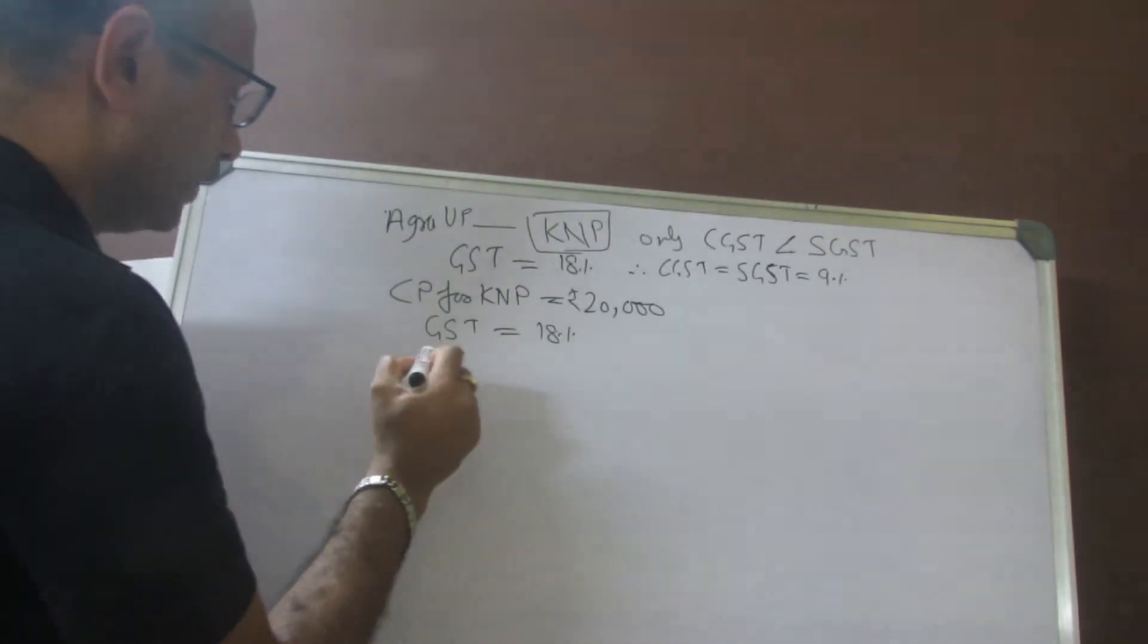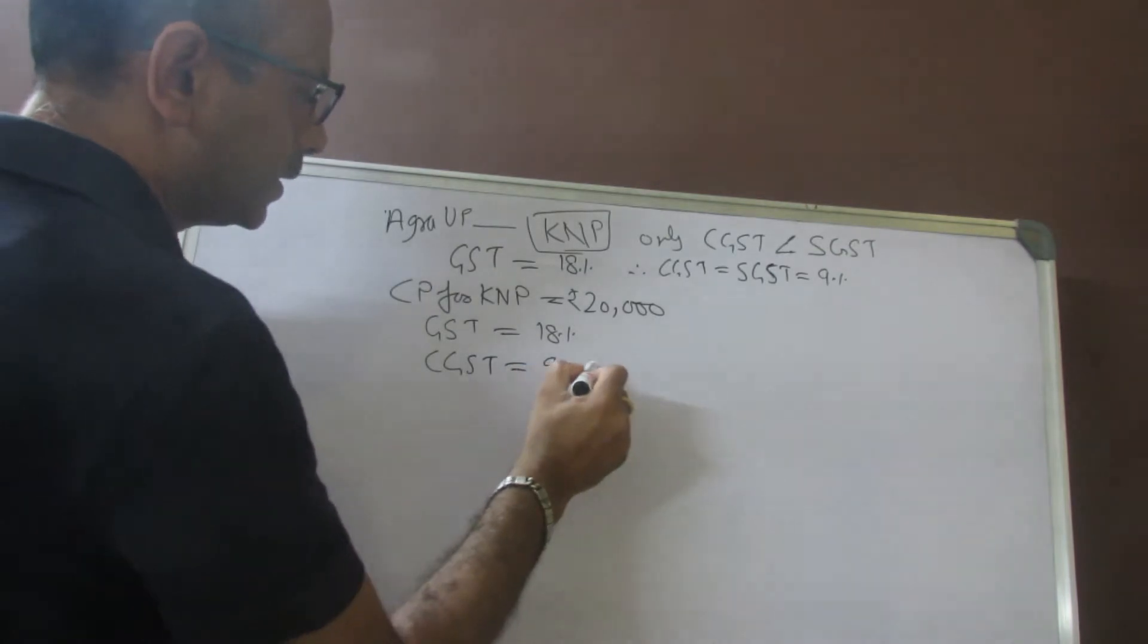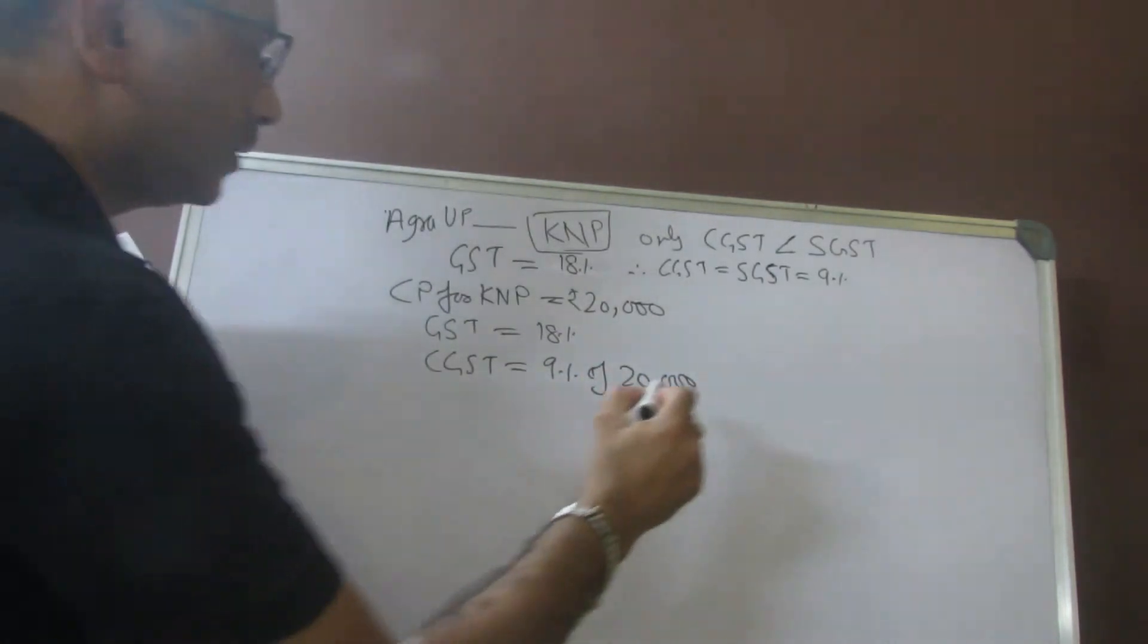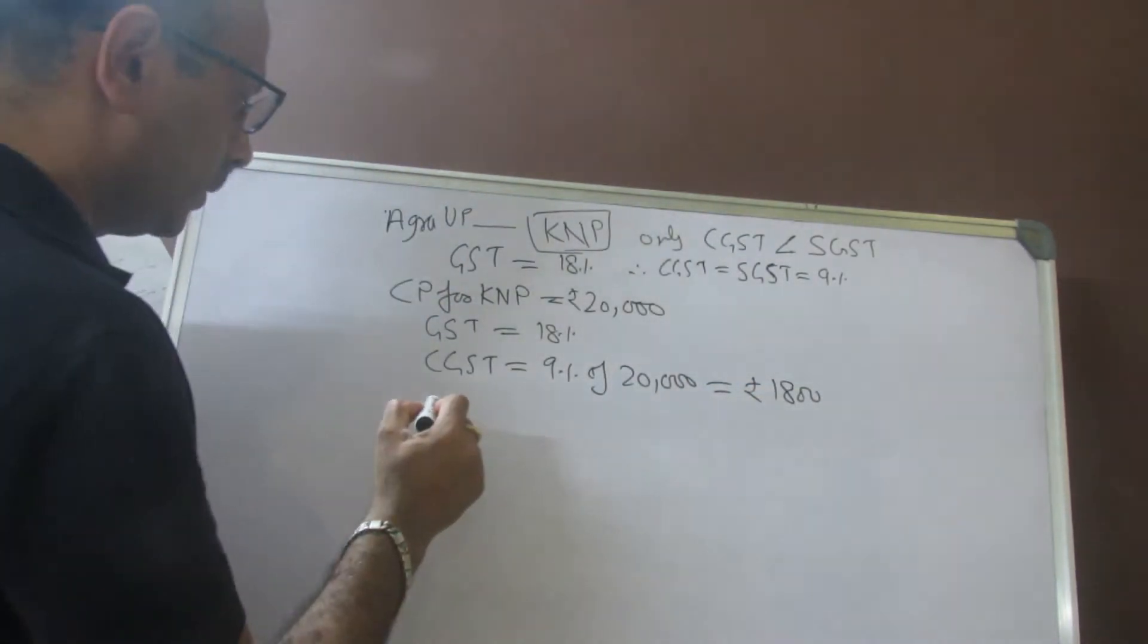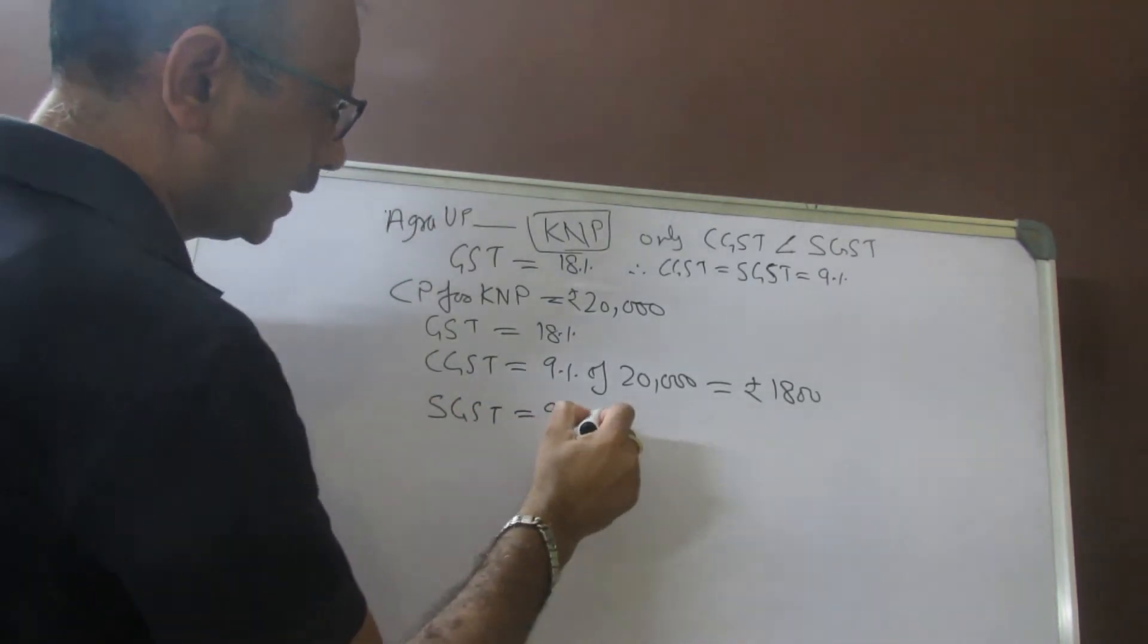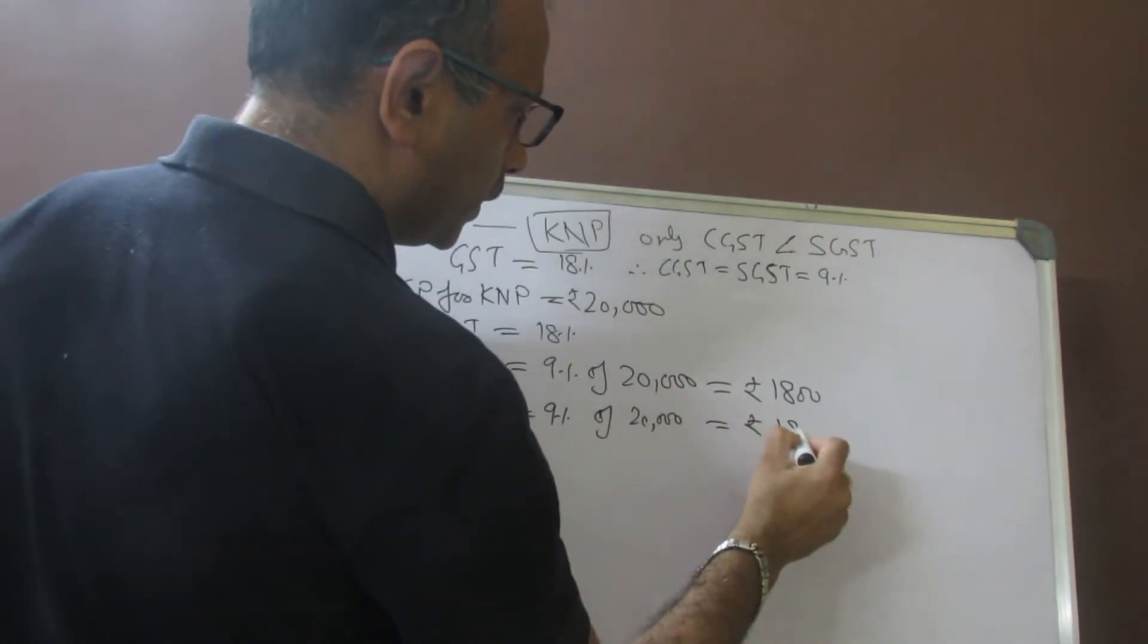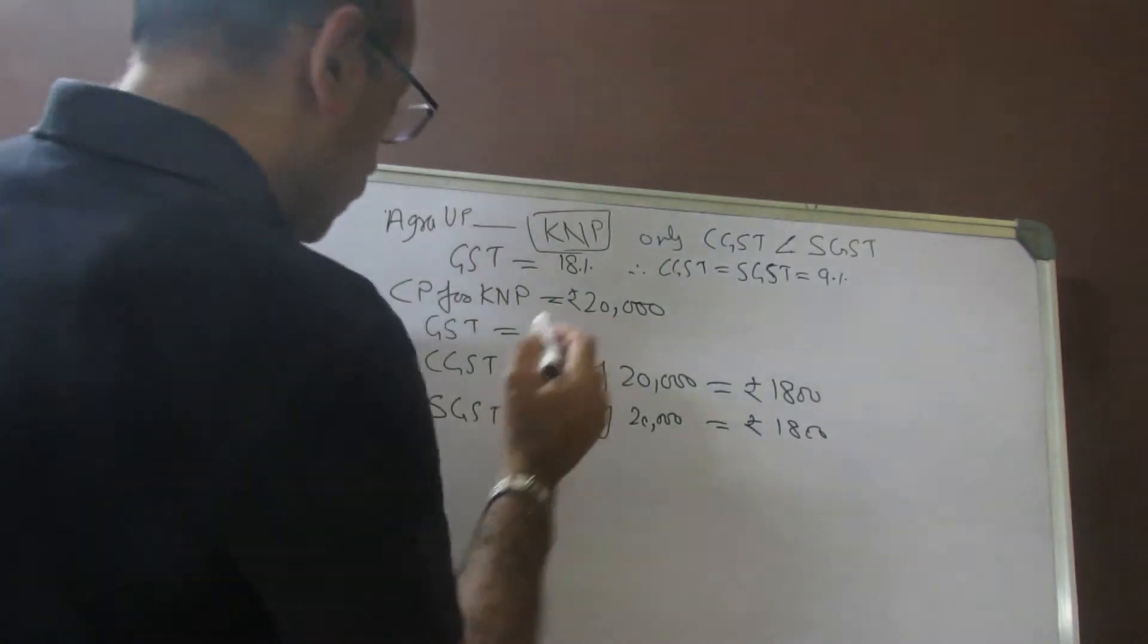So dealer at Kanpur will pay CGST of 9% of 20,000, and if you calculate this, it would be rupees 1,800. Similarly, SGST would be 9% of again 20,000, which is again going to be 1,800 rupees.